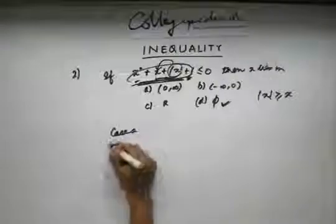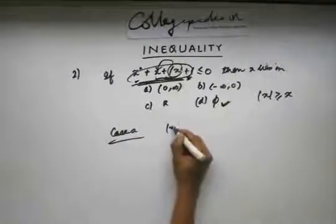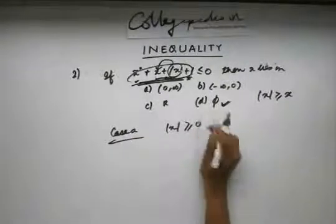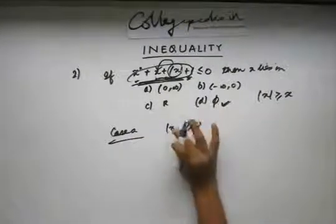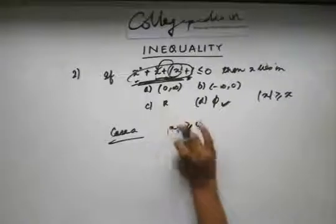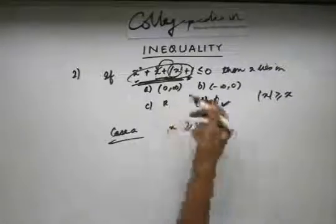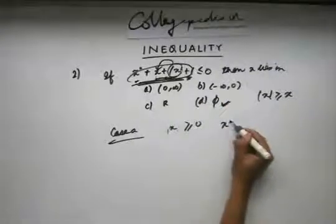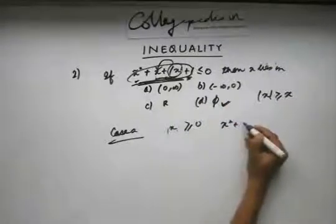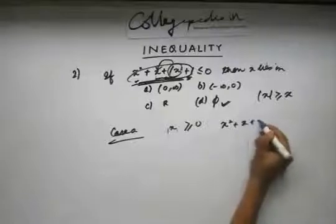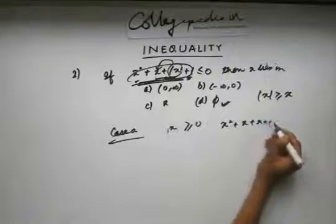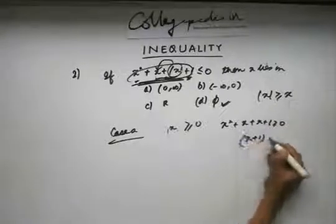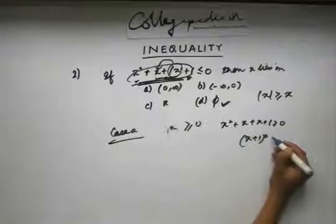First case: x is greater than or equal to zero, so mod x is positive. I can write the inequality as x² + x + x + 1 ≤ 0, which makes it (x + 1)² ≤ 0.